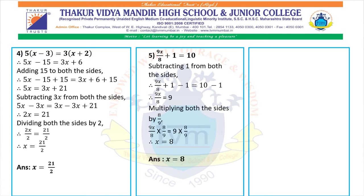Fifth: 9x upon 8 plus 1 equals 10. First we subtract 1 from both sides, giving 9x upon 8 equals 9. Now multiplying both sides by 8 upon 9 (the reciprocal of 9 upon 8): 9x upon 8 into 8 upon 9 equals 9 into 8 upon 9. Therefore x equals 8. The answer is x equals 8.